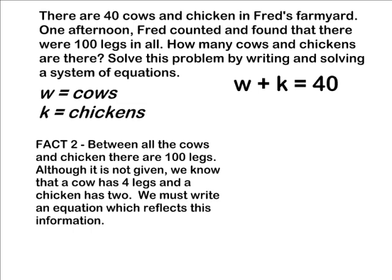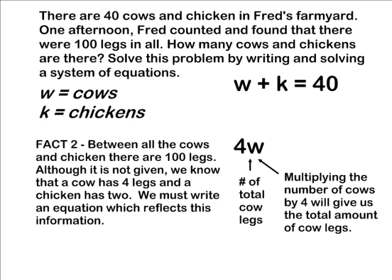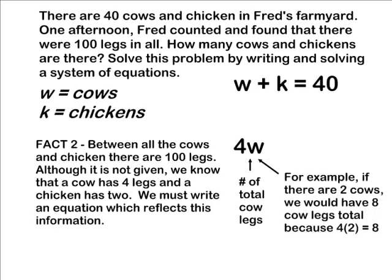We already know that w stands for the number of cows. Because a cow has 4 legs, multiplying 4 by the number of cows gives us the total number of cow legs. For example, if we had 2 cows, we would substitute 2 in for w and multiply by 4, giving us 8 cow legs.